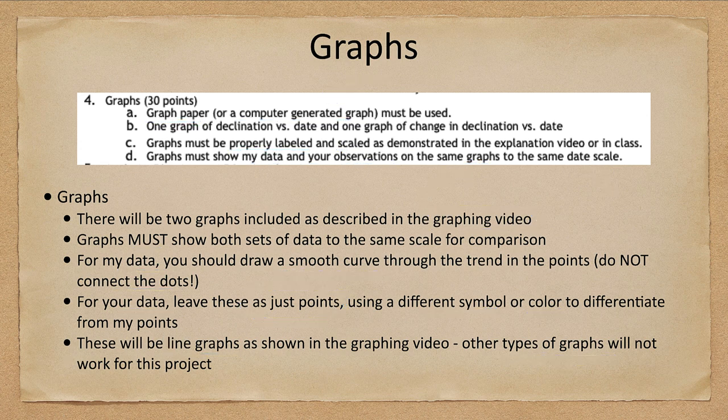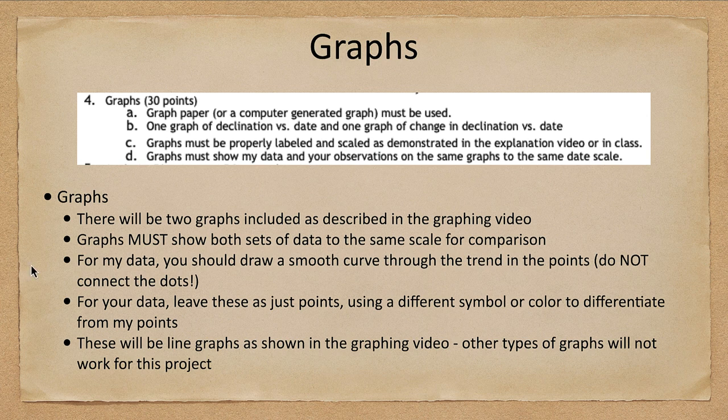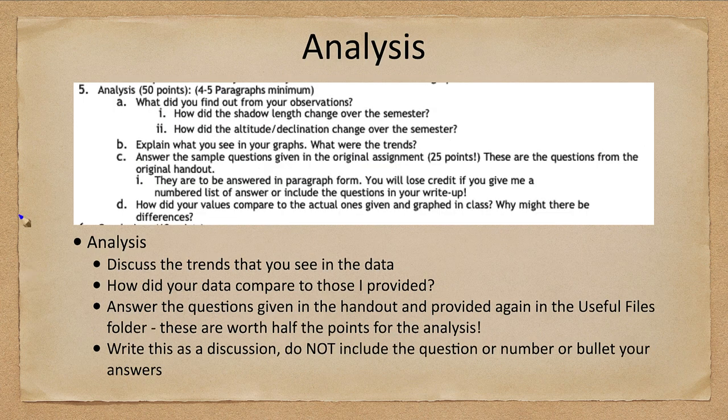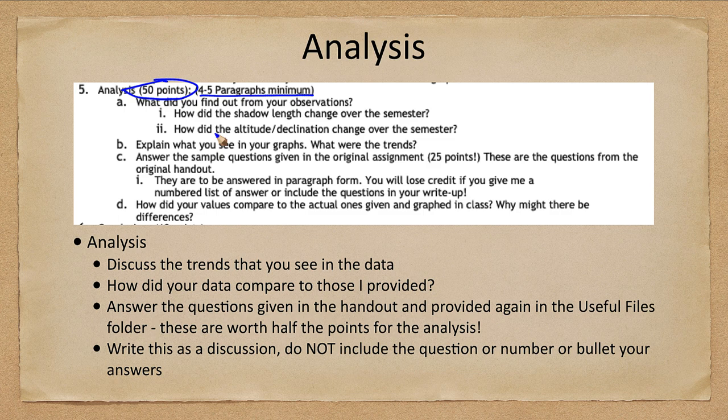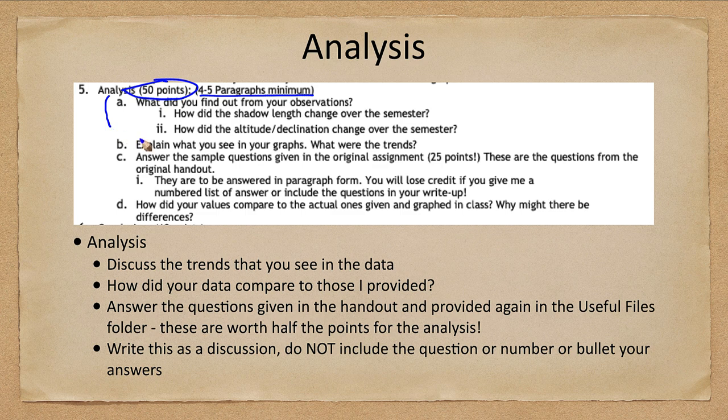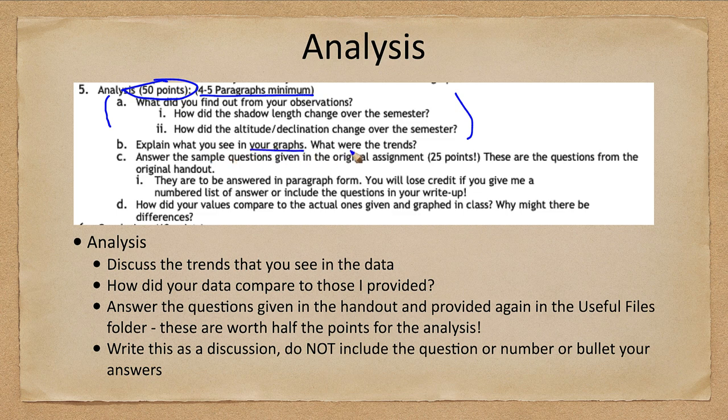The big part of this is the analysis, worth 50 points of the final project. You're going to need a minimum of about four to five paragraphs, two to three pages, to make sure you answer everything. Discuss what you found out: how the shadow lengths and altitude changed. What did you find from your data tables? How did these things change? What did you see in your graphs? What kind of trends did you see?